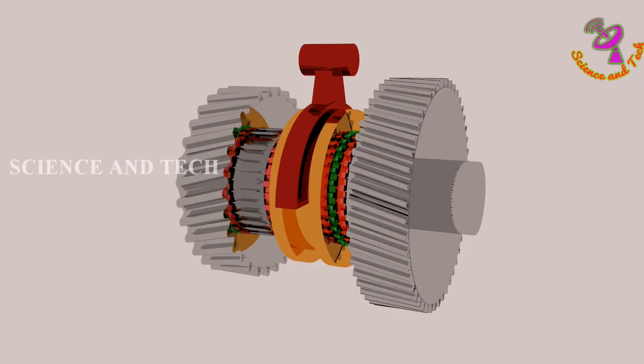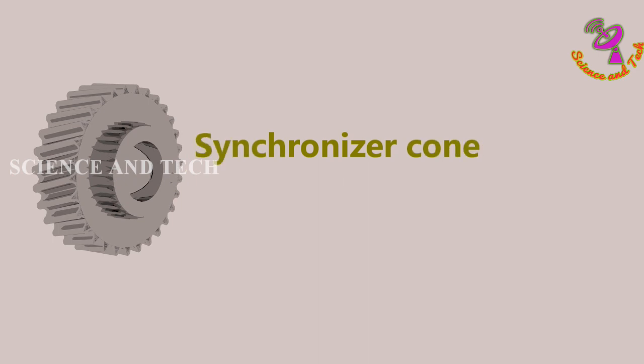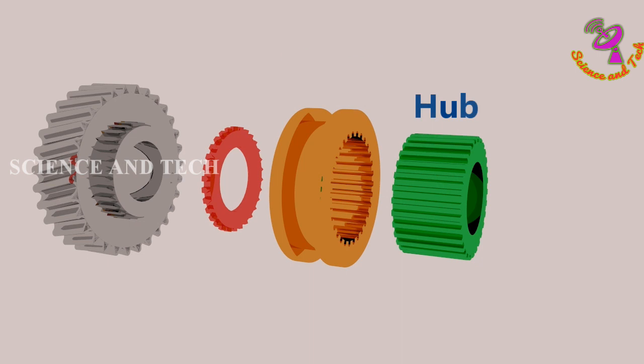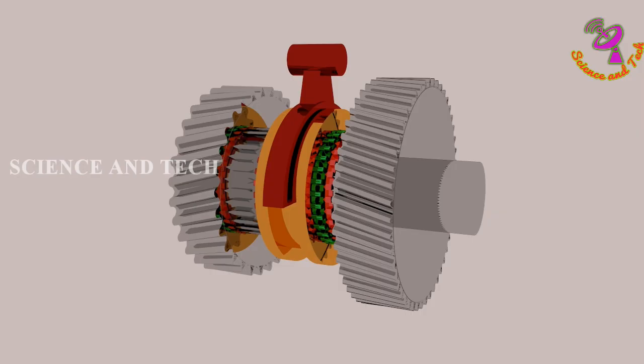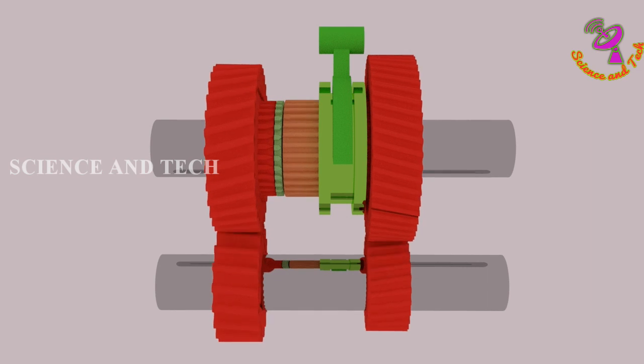Let's see some basic parts of manual transmission. They are synchronizer cone, synchronizer ring, hub, sleeve and shaft. Hub is fixed with shaft. Sleeve will rotate with hub and on the other hand it will act as sliding mechanism. Sleeve connects shaft and gear.